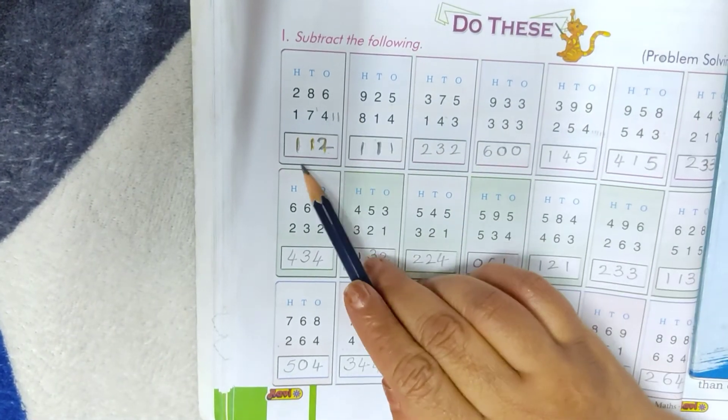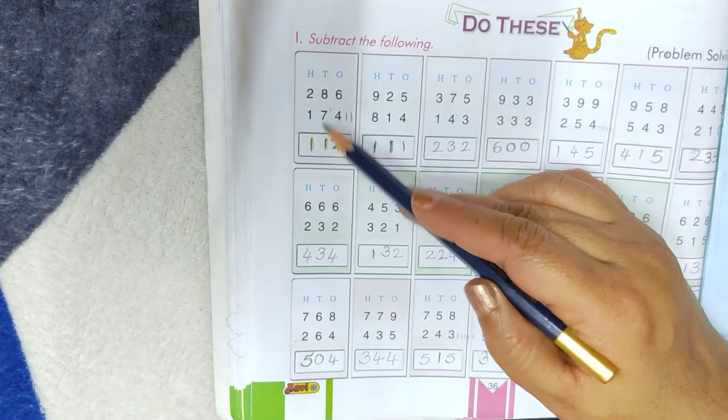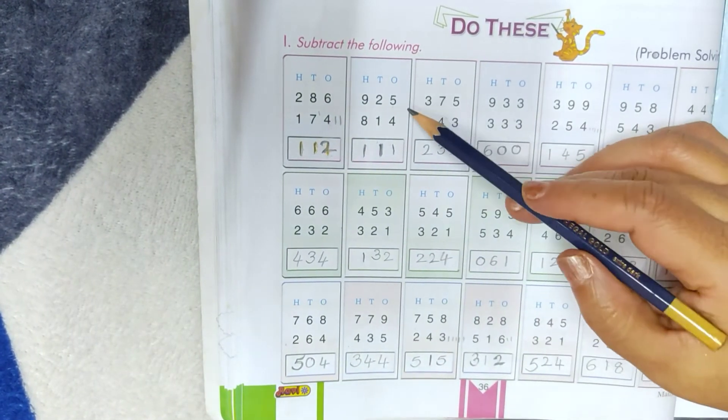Then write 2 under 1's place. Write 1 under 10's place. Write 1 under 100's place.